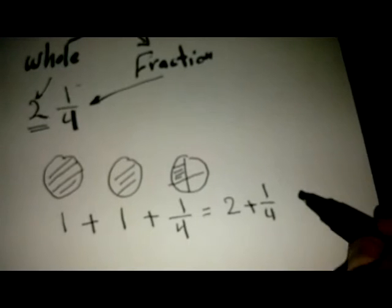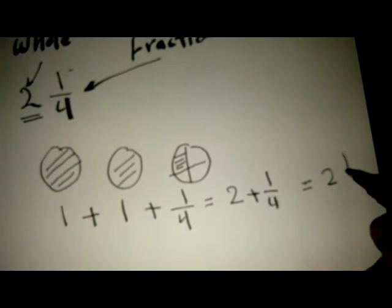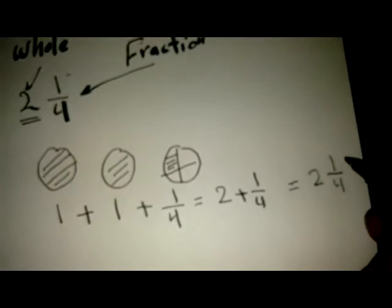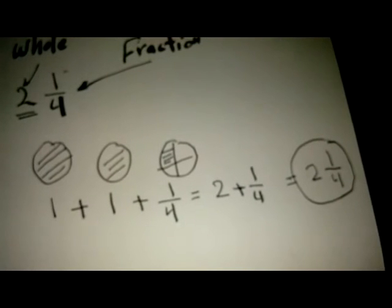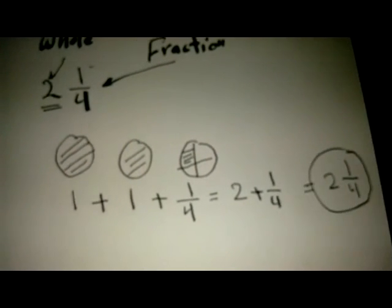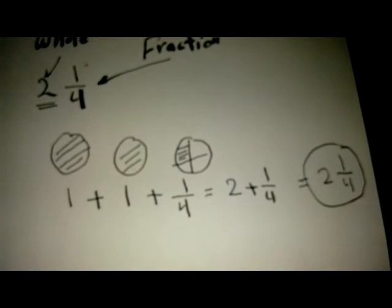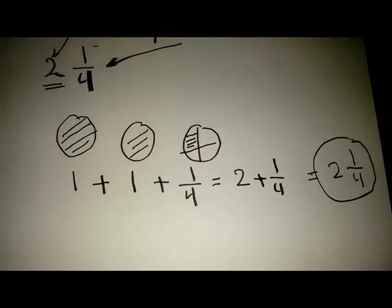Two plus a quarter, which means two and a quarter. This number is called a mixed number. Okay, thanks for watching and see you in the next video. Salam.